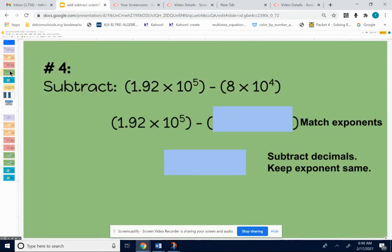Okay, a couple more. Number 4, 1.92 times 10 to the fifth minus 8 times 10 to the fourth. Now we can't keep going with this problem until we get the exponents to match up. We have 10 to the fifth and 10 to the fourth. So let's work on 10 to the fourth. Let's make 10 to the fourth into 10 to the fifth. We're adding 1 to that exponent to make it match up with the bigger 10 to the fifth.